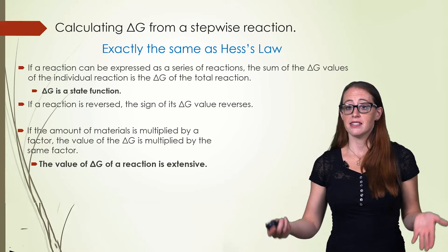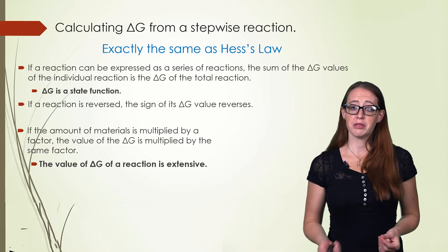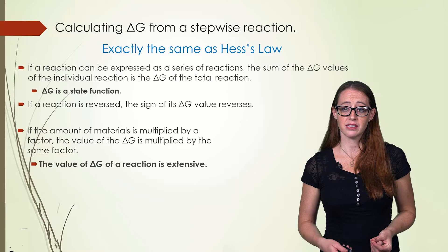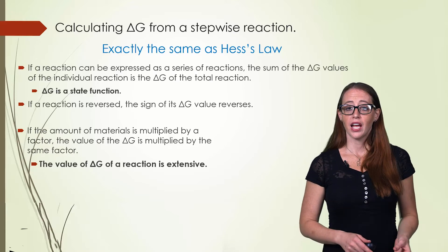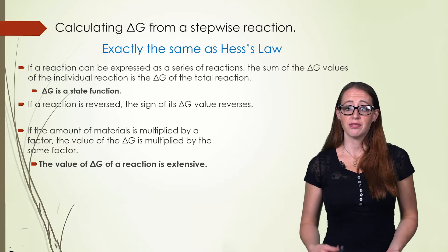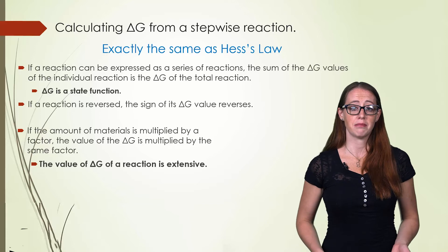We get to do this because delta G is a state function. The rules for how to manipulate the reactions to be able to add them together are also identical to Hess's law. If a reaction is reversed, the sign is changed. If the reaction is multiplied, then you multiply the Gibbs free energy by that same multiple.